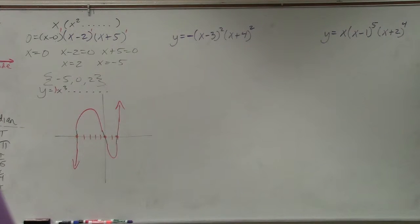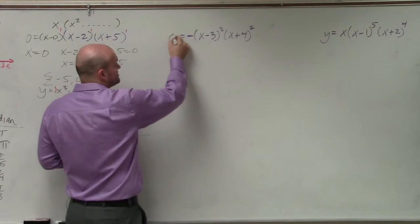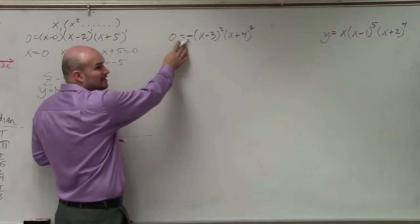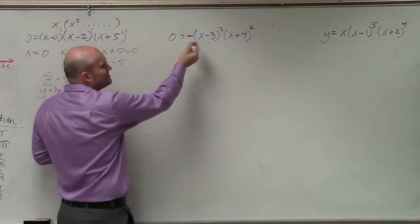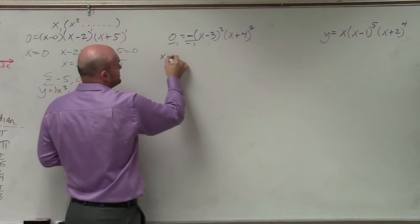A little bit quicker. But the next example is the exact same thing, ladies and gentlemen. To solve the zeros, we replace this with 0. Set everything equal to 0. Now, in reality, do we really care about this negative right now? No, I could divide that out, right?